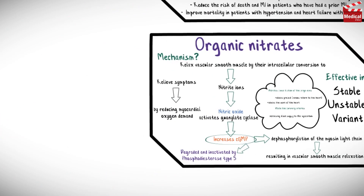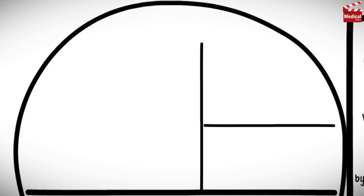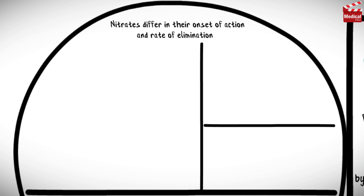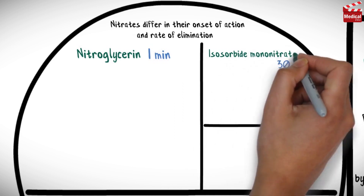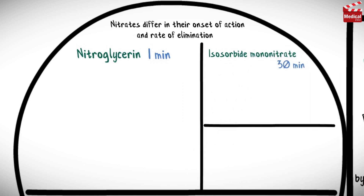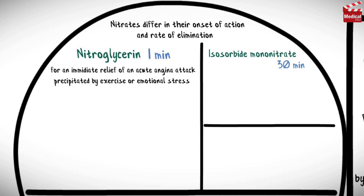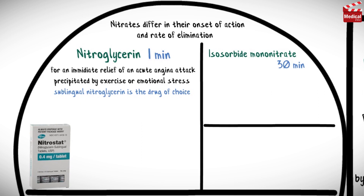There are three drugs in this class. Nitrates differ in their onset of action and rate of elimination — the onset varies from one minute for nitroglycerin to 30 minutes for isosorbide mononitrate. For immediate relief of an acute angina attack precipitated by exercise or emotional stress, sublingual nitroglycerin is the drug of choice.